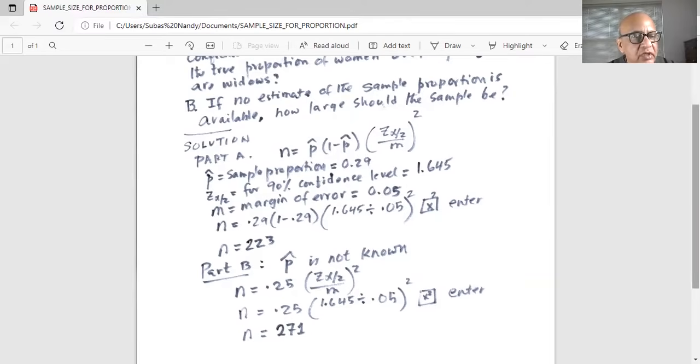So how will I do it in my calculator? I will have 0.25 in the calculator then put the left parenthesis 1.645 divided by 0.05 close the right parenthesis and then square by pressing the x square button in the first column and hit enter. And remember we always round it up.